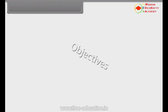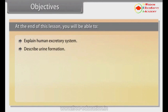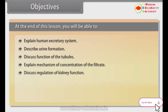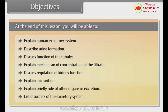Objectives. At the end of this lesson, you will be able to: explain the human excretory system; describe urine formation; discuss functions of the tubules; explain mechanism of concentration of the filtrate; discuss regulation of kidney function; explain micturition; explain briefly the role of other organs in excretion; and list disorders of the excretory system.